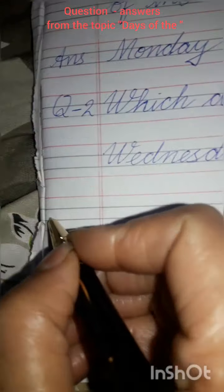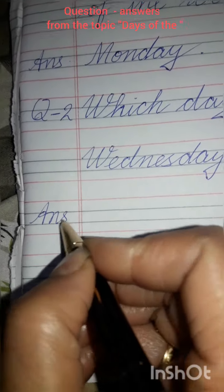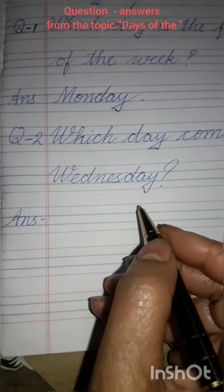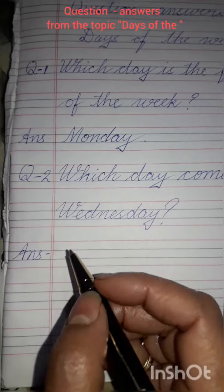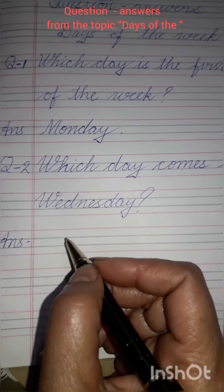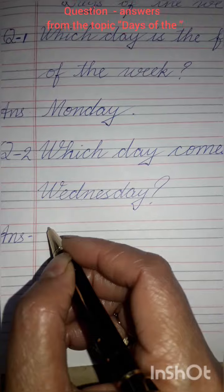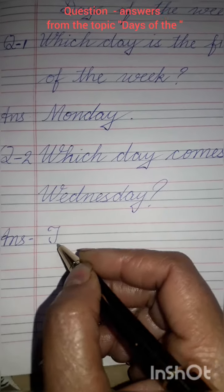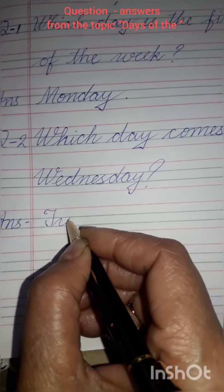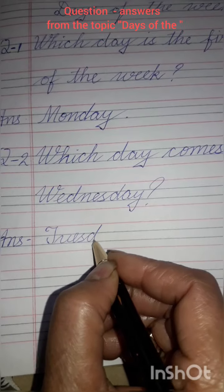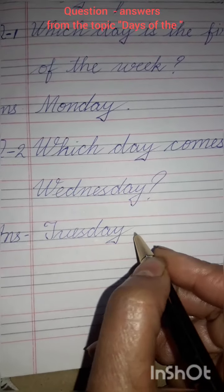Then you will write down short form of answer A-N-S here. Then answer will be Tuesday, because Tuesday comes before Wednesday. So you will write down the spelling of Tuesday. T-U-E-S-D-A-Y.